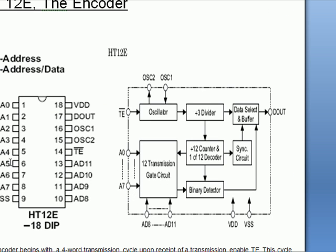Basically, they have operating voltages from 2.4 volts to 12 volts and they are CMOS ICs. Encoder HT12E has 8 address lines.